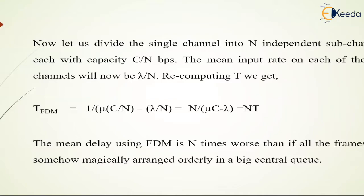The equation for T is now T_FDM = 1 / (μC/N - lambda/N) = N / (μC - lambda) which equals N times T.